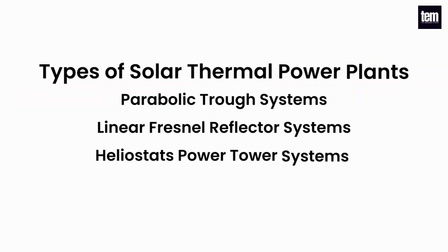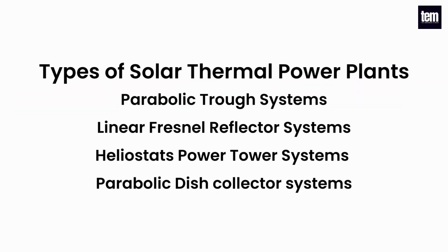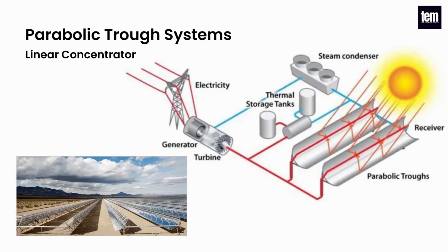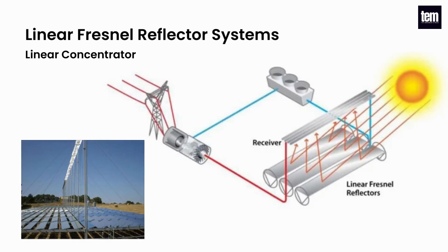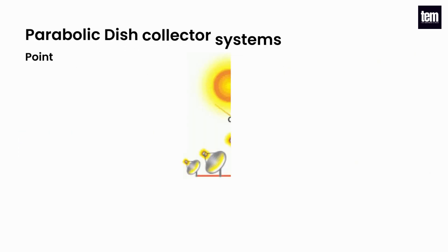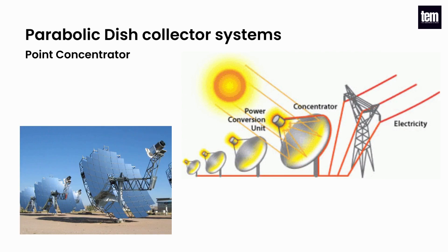There are different types of solar thermal power plants: parabolic trough systems, linear fresnel reflector systems, heliostats power tower systems, and parabolic dish collector systems.